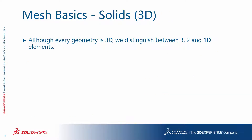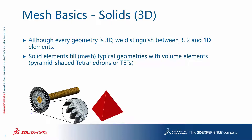A few words about element types. In principle, everything in the world is three-dimensional, obviously, but in the context of finite element analysis, we distinguish between three-, two-, and one-dimensional elements. Solid elements fill, or mesh, typical geometries with volume elements. These are pyramid-shaped tetrahedrons, or tets in short.